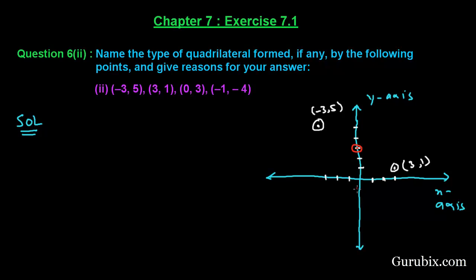And now we have (-1, -4) — here we have -1, -2, -3, and -4. Let us name these points: suppose this is point A at (-3, 5), this is point B at (0, 3), this is point C at (3, 1), and this is point D at (-1, -4). Let us join these points.